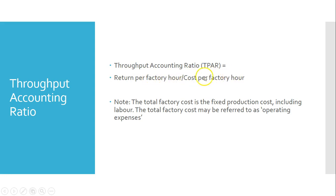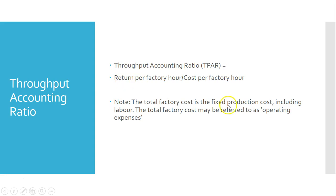What we're going to look at now is how we work out the cost per factory hour. When we talk about cost here, we're talking about all the fixed costs — labor and all the other fixed costs. Previously we subtracted material cost from sales revenue to find throughput. You could almost call this the cost per factory hour.